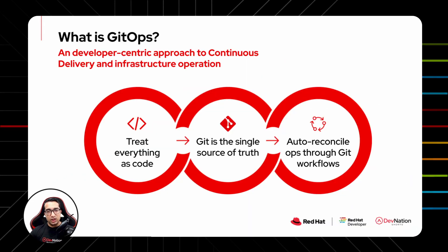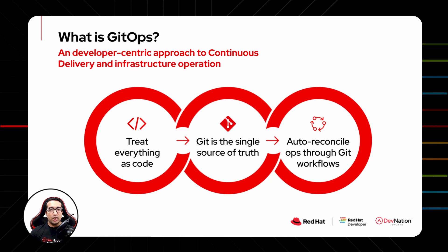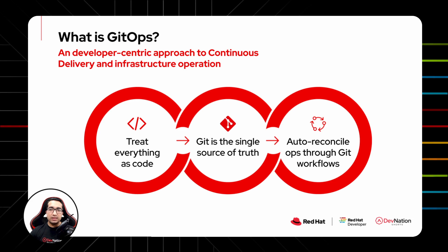GitOps is the way for achieving continuous delivery of applications and infrastructure operations. In GitOps, everything is treated as code, which means the desired state of infrastructure, application, and configurations is defined declaratively as code.